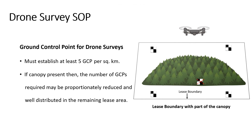Under the new SOP, the ground control points have been updated. As mentioned in the previous SOP, with a certified DGPS instrument, the mine should establish at least 5 GCPs per square kilometer of the lease area. In the new SOP, an example has also been provided to aid comprehension.